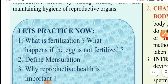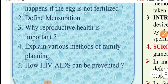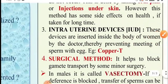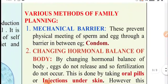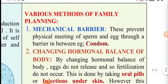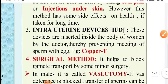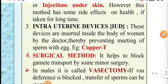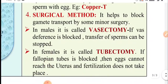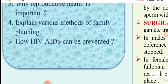Now the fourth question: explain various methods of family planning. These are the various methods you can write. You can write any method or all of them. First: mechanical barrier. Second: changing hormonal balance of the body. Next: intrauterine devices. Fourth: surgical method. So these are four methods — you can write them in your answer.